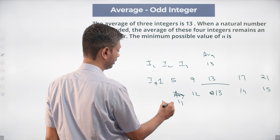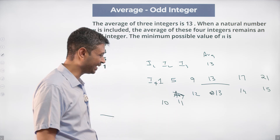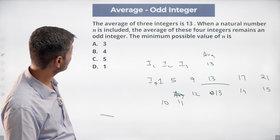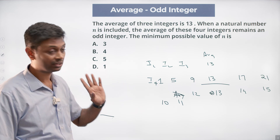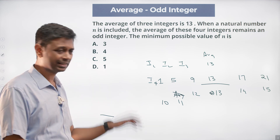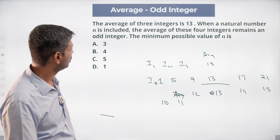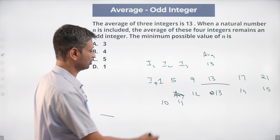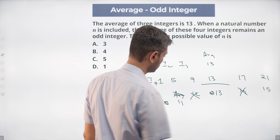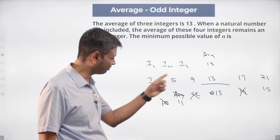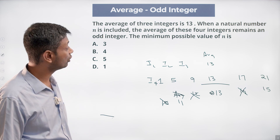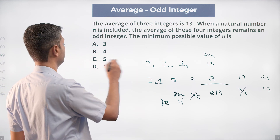You cannot bring in less than 1 because n is a natural number. The fourth integer I4 is a natural number, so it must be at least 1. Since the average must remain an odd integer, values giving even averages are excluded. Bringing in 5 gives an average of 11, which is odd — so the minimum possible value of n is 5.